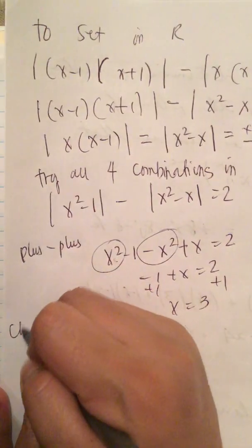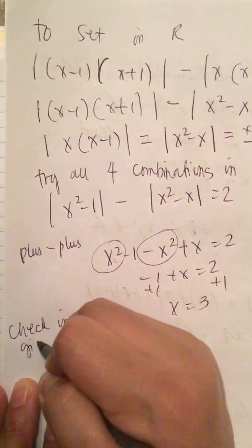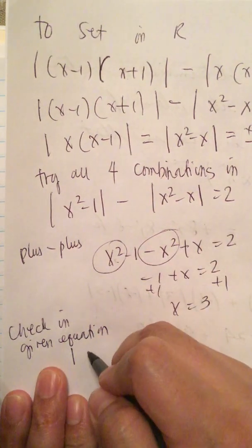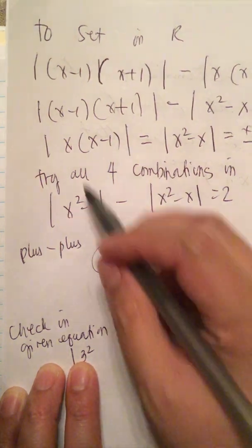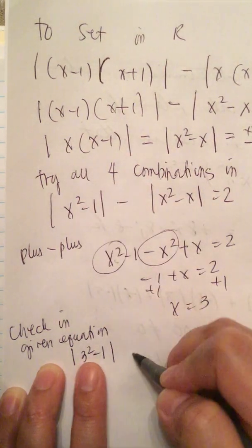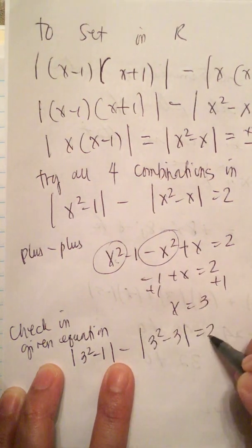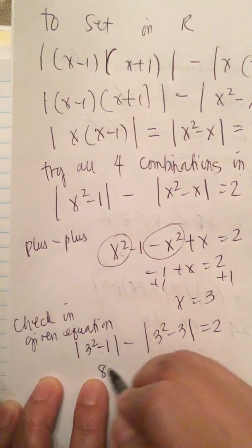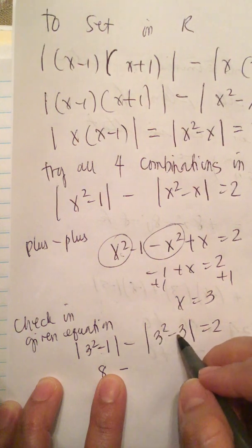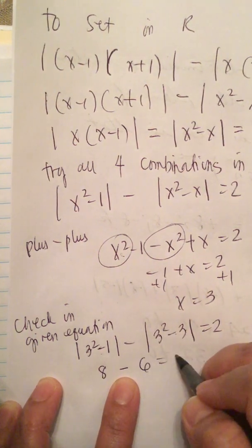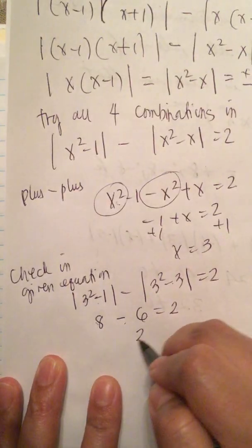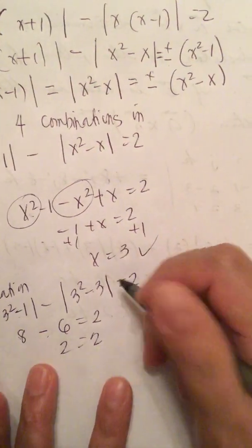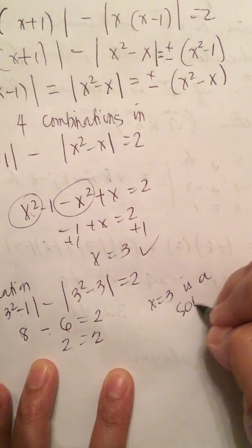We check by plugging x equals 3 into the original equation. We get the absolute value of 3 squared minus 1, minus 3 squared minus 3, equals 2. So 3 times 3 is 9, minus 1 is 8, minus 9 minus 3 is 6, equals 2. And 8 minus 6 equals 2. So x equals 3 is a solution.